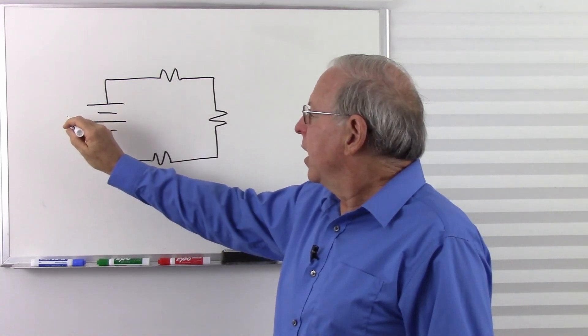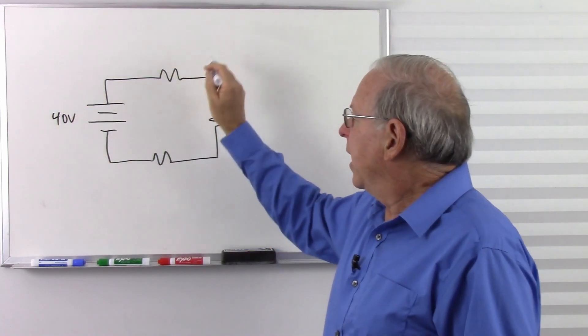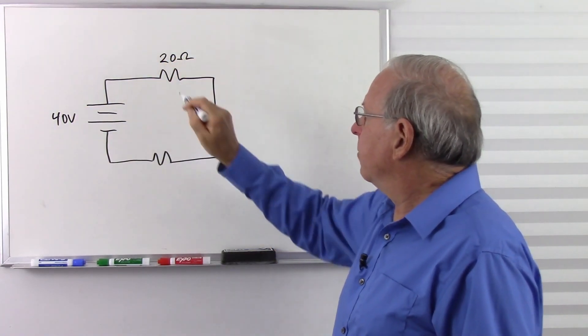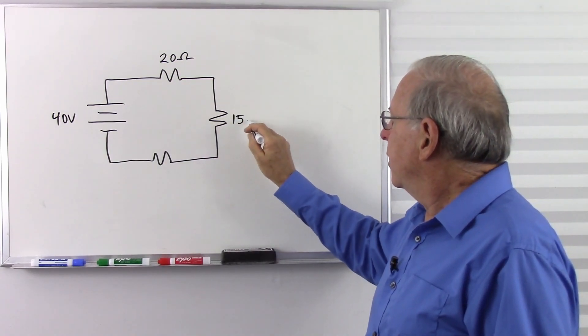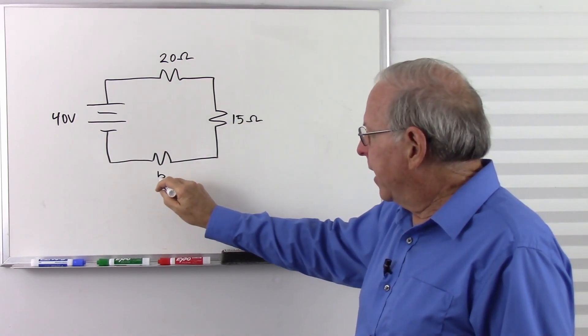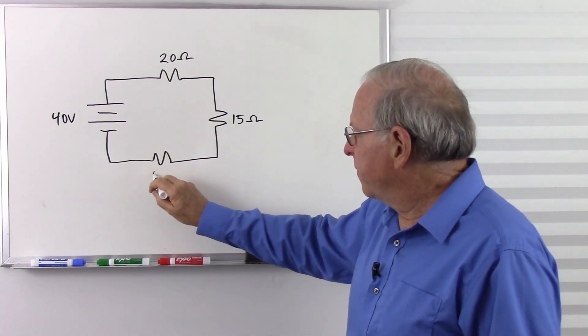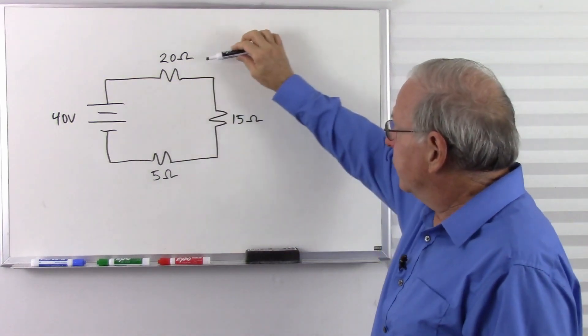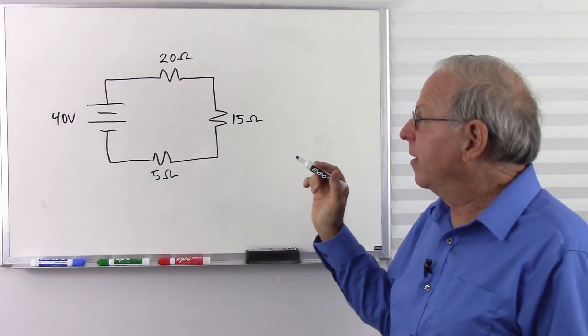Let's make this a 40-volt battery and let's make this a 20-ohm resistor, just to make the numbers easy. Let's make this a 15-ohm resistor and make that a 5-ohm resistor. I did that just so the numbers would add up. So 20 plus 15 plus 5 equals 40. That's just going to make the numbers real easy.